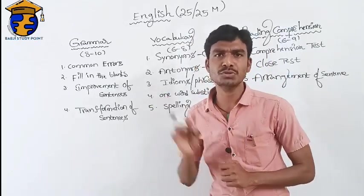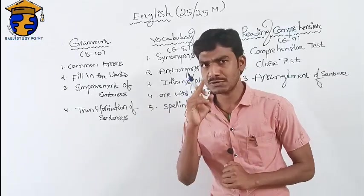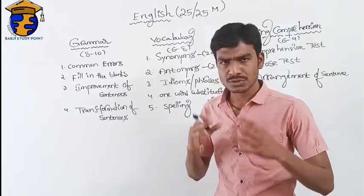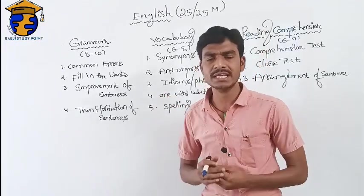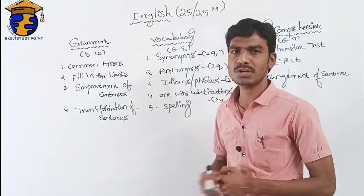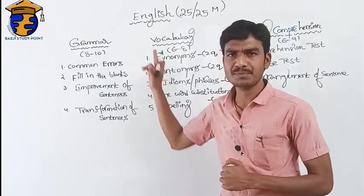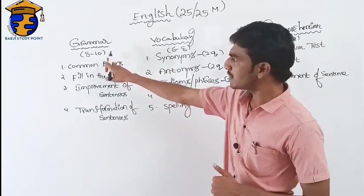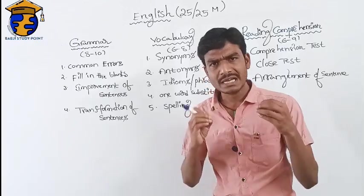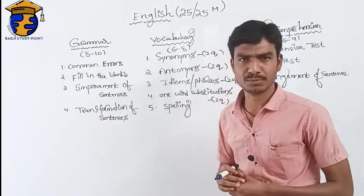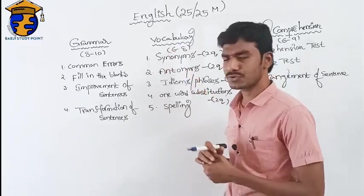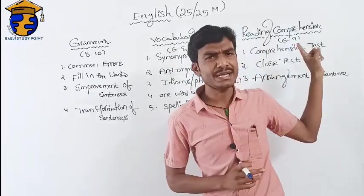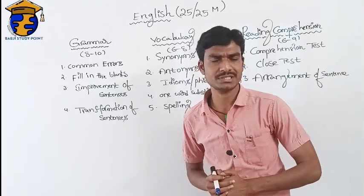Every wrong answer has negative marks. Now let's explain the syllabus. English is divided into three parts: the first part is grammar, with 8 to 10 marks chance; the second part is vocabulary, with 6 to 8 marks chance; and the third part is reading comprehension, with 6 to 9 marks chance.